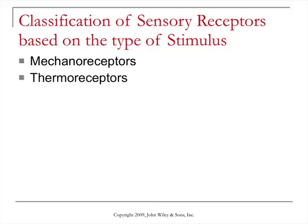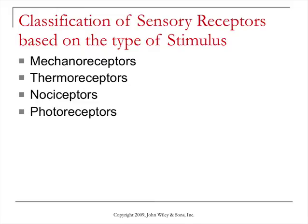Thermoreceptors are receptors that detect changes in temperature. Nociceptors respond to painful stimuli that come from physical or chemical damage to tissue. Photoreceptors detect light, and so these would be found in the retina of your eye. Chemoreceptors detect chemicals — for instance, they detect chemicals in your mouth, in your nose, or in body fluids.